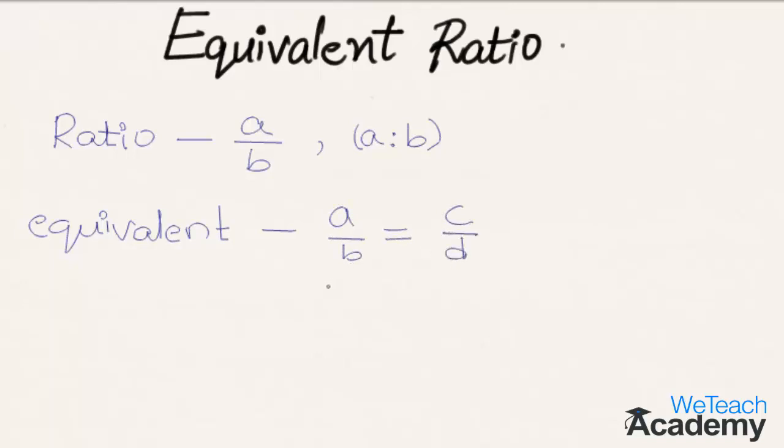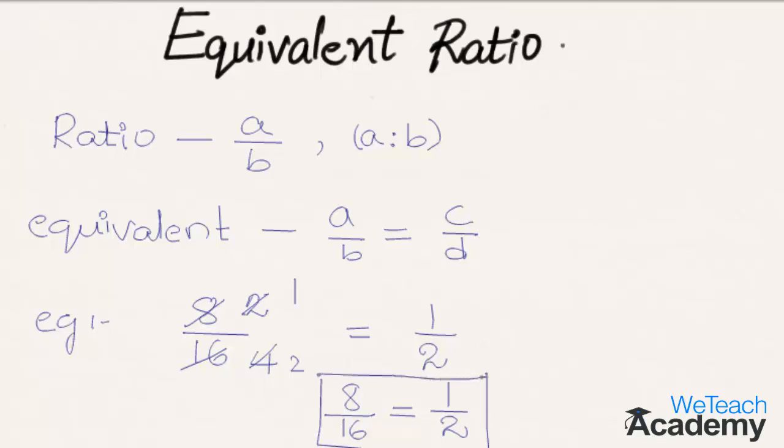For example, let us take 8 by 16 and simplify this. So here 4 times 2 is 8 and 4 times 4 is 16, and again 2 times 1 is 2 and 2 times 2 is 4. So we get here 1 by 2 as the simplest form of 8 by 16. So we can say that 8 by 16 is equivalent to 1 by 2. So these both ratios are called as equivalent ratios.